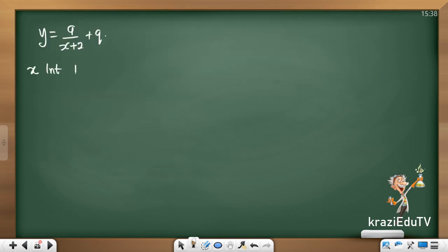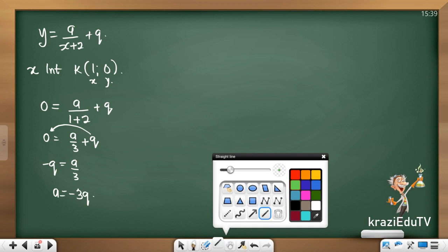So x intercept at k. Substitute that in. It's my x and that's my y. My y is 0. 0 equals to, we don't know a, but I know my x as 1 plus 2. Show your substitution all the time. 0 equals to a over 3 plus q. What do we do? We move that over. Negative q equals to a over 3. What is our a? Negative 3q.